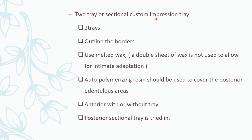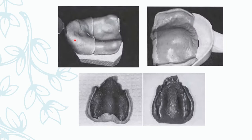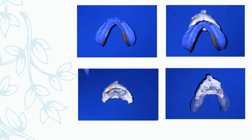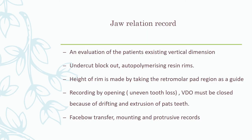For a two-tray or sectional custom impression tray, two trays are used. The borders are lined with melted wax to cover the undercuts. Autopolymerizing resin is used to cover the posterior edentulous areas, and the anterior can be done with or without the tray. The posterior sectional tray is tried in. An alternative is a two-step tray — like a putty index used together with a light body impression.